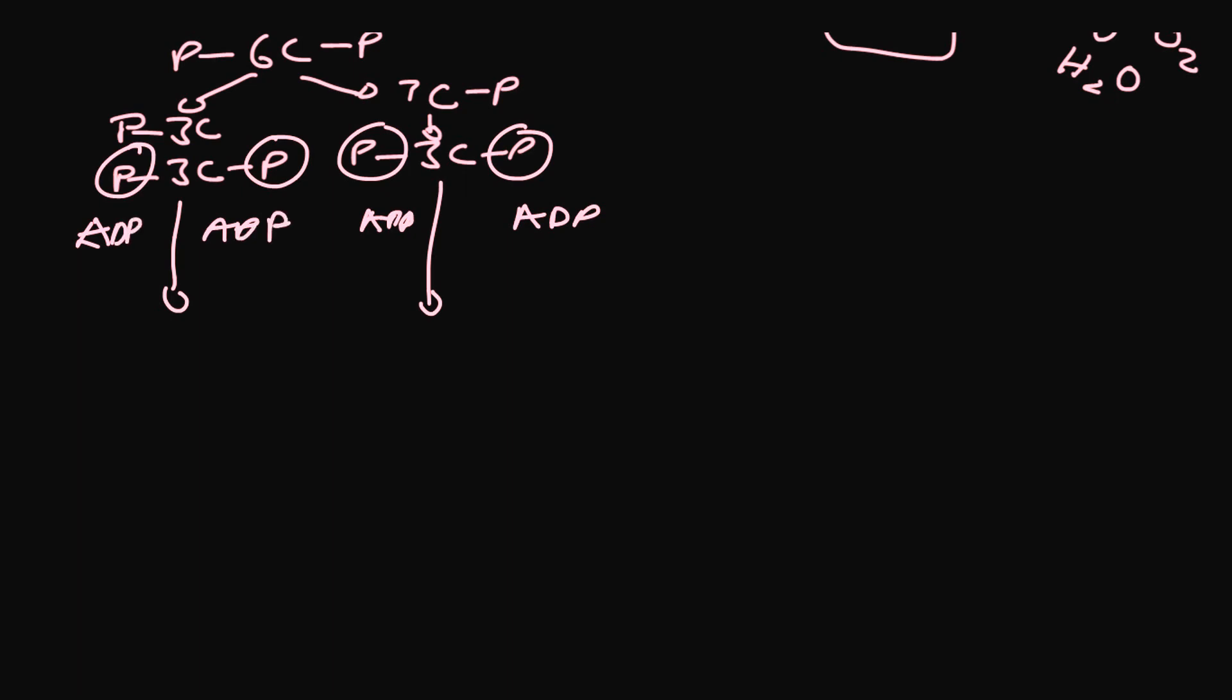To give us a grand total of four ATPs. Four have been produced, two have been consumed in the phosphorylation step, so it gives us a net production of two ATPs.